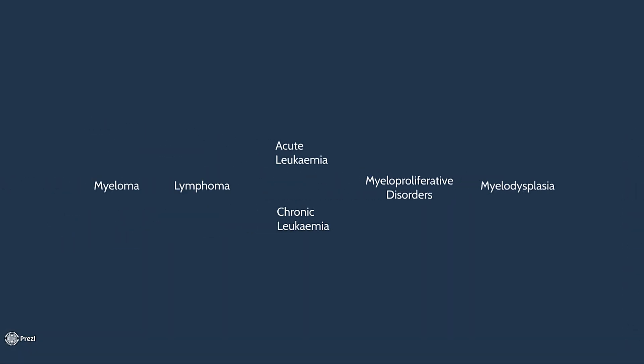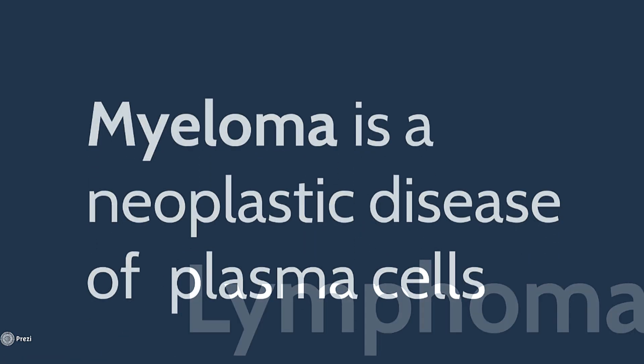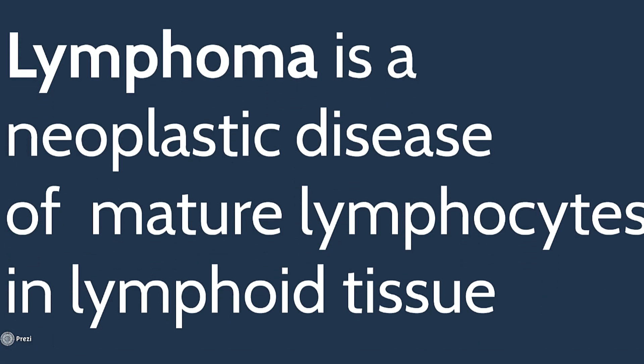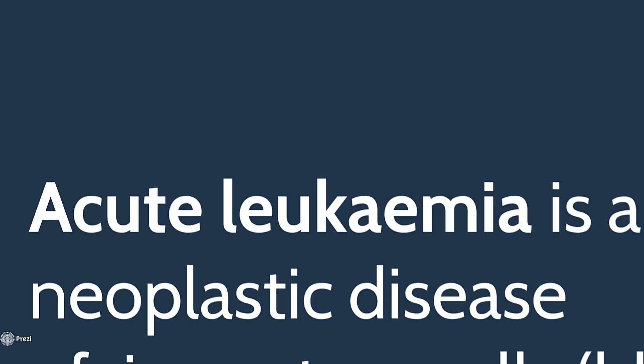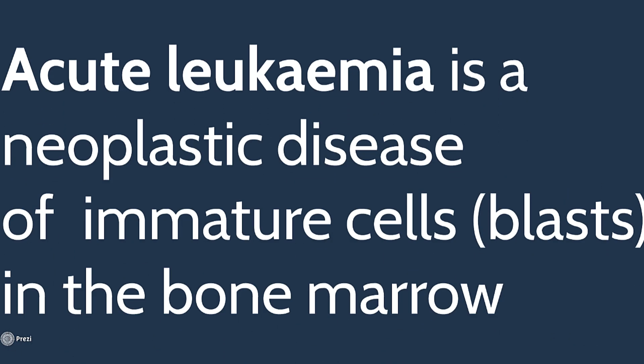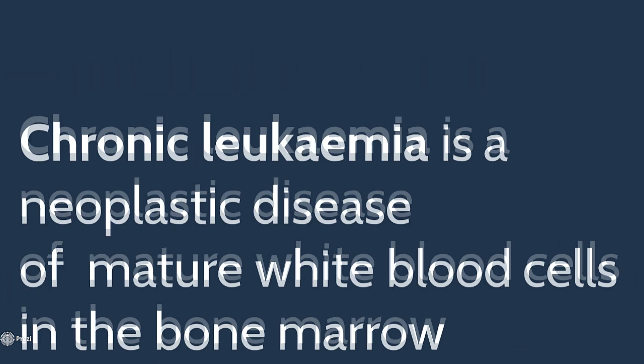So that's it — you should now have a very basic understanding of the main malignancies in haematology. To recap: myeloma is a neoplastic disease of plasma cells. Lymphoma is a neoplastic disease of mature lymphocytes in lymphoid tissue. Acute leukaemia is a neoplastic disease of immature white blood cells called blasts in the bone marrow. Chronic leukaemia is a neoplastic disease of mature white blood cells in the bone marrow.